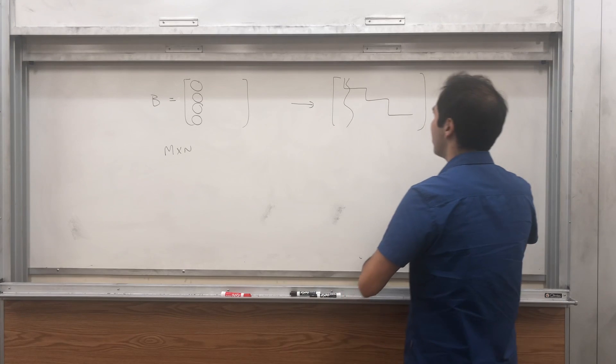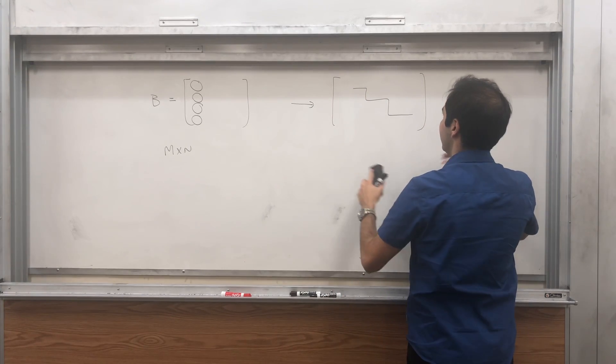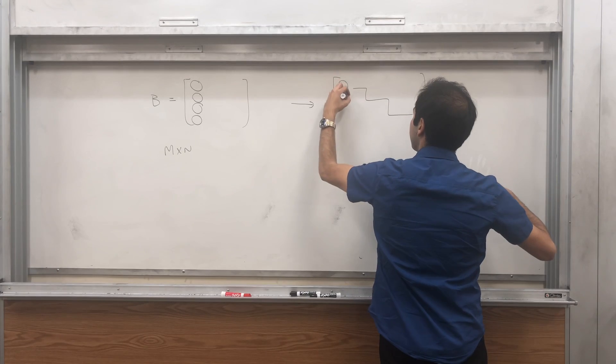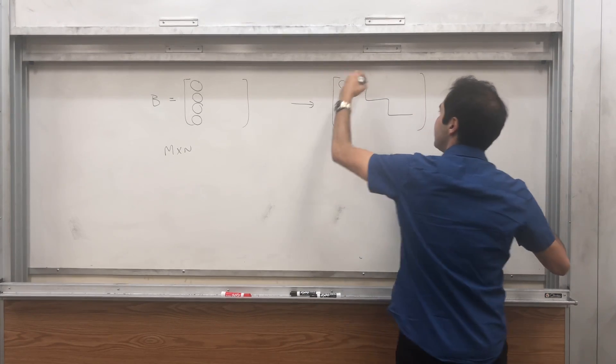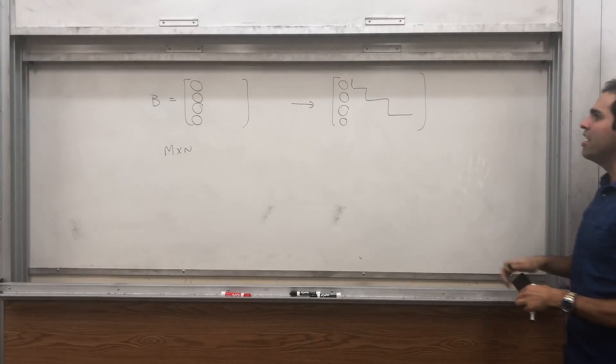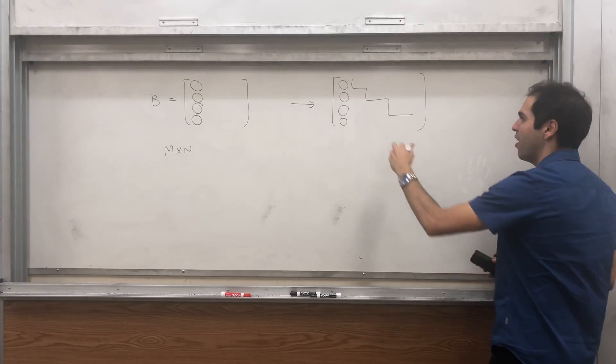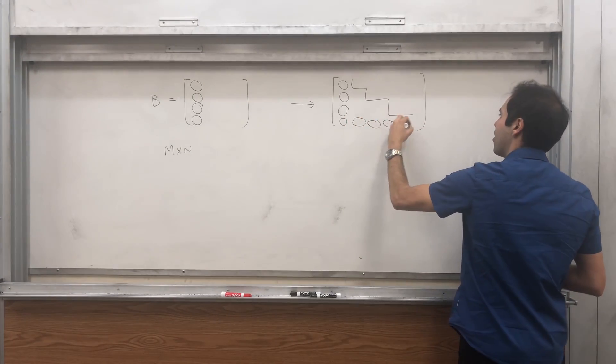And if you add, let's say, three times this row to this row, this zero will also stay zero. So B, what it looks like, actually looks like a bunch of zeros and then something upper triangular. And again, by assumption, we assume all the zero rows are at the bottom.